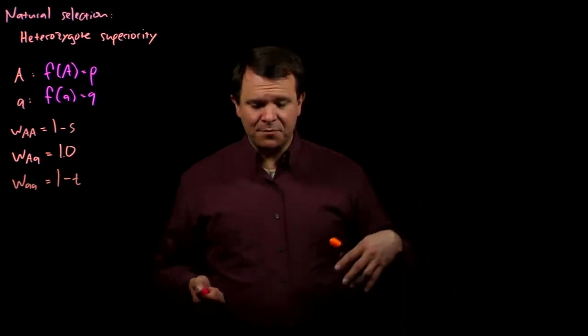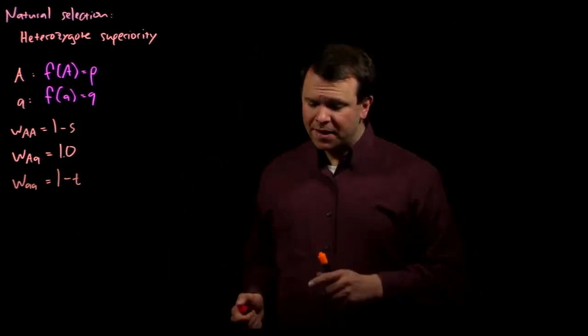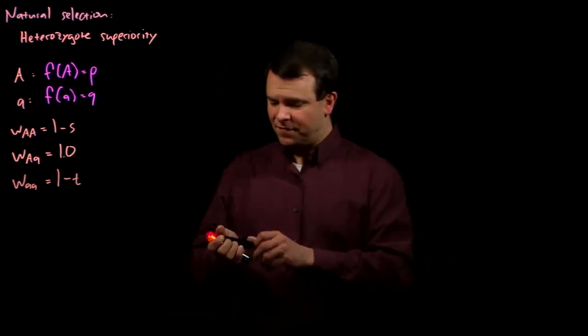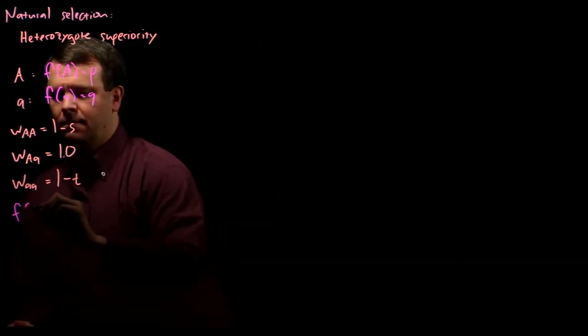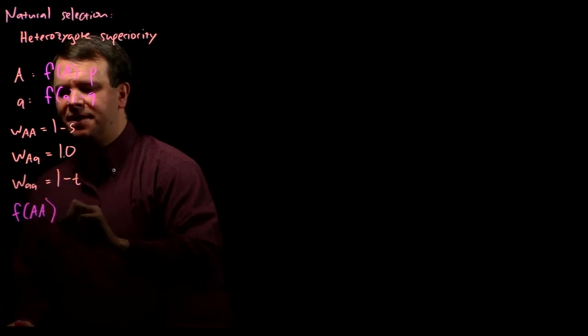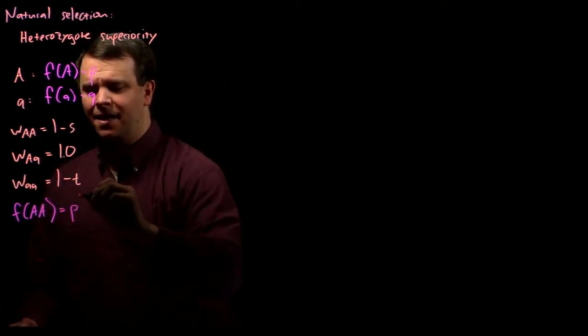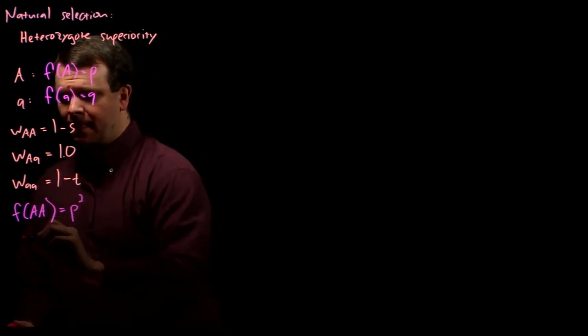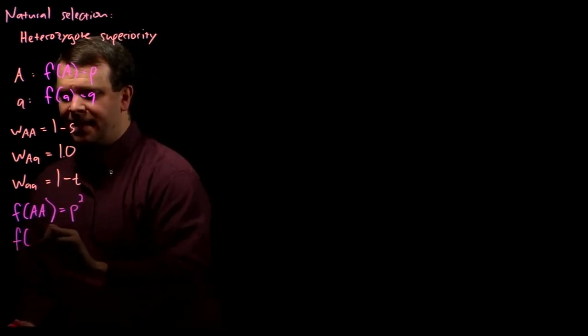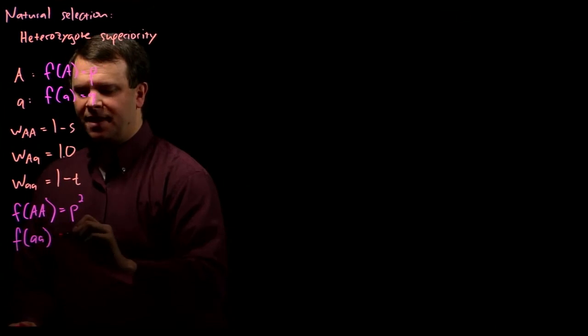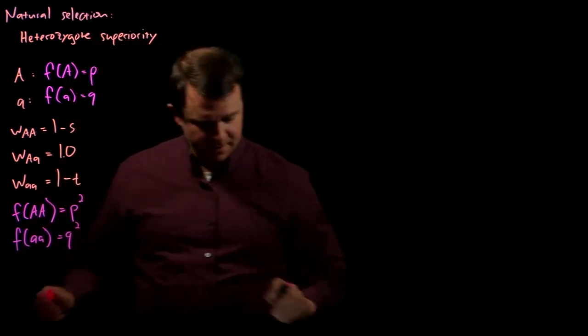At equilibrium, the frequency of the homozygous dominant individuals is p squared. The frequency of the homozygote recessive individuals is q squared.